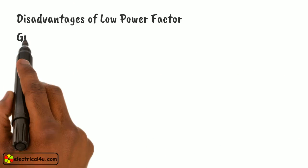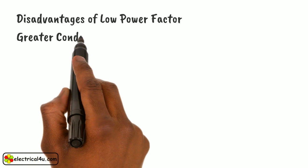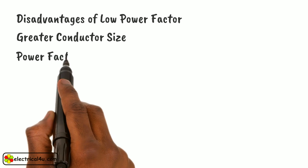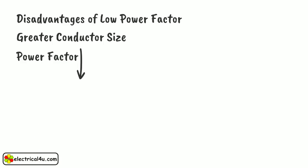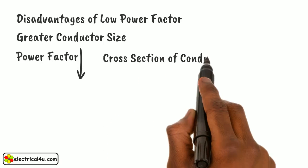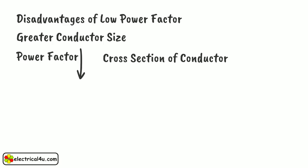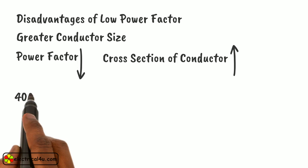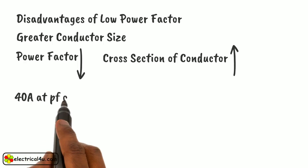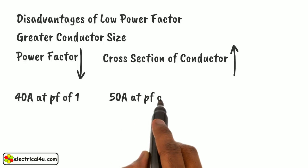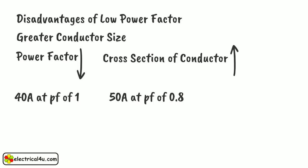The second point is greater conductor size. At low power factor, for transmitting the same quantity of useful power, a larger cross section of conductor is required. This is because at low power factor, more current is required to fulfill the useful power demand of consumers. For example, if a consumer takes 40 A at a power factor of 1, he will take 50 A at a power factor of 0.8 for the same kilowatt demand, since the current is inversely proportional to the power factor.